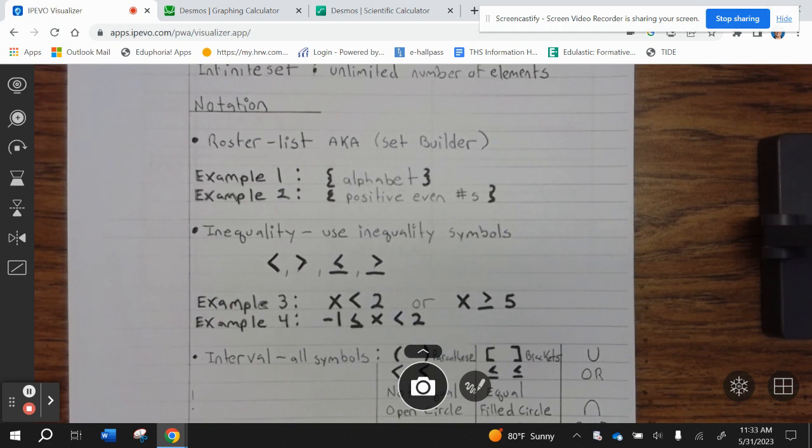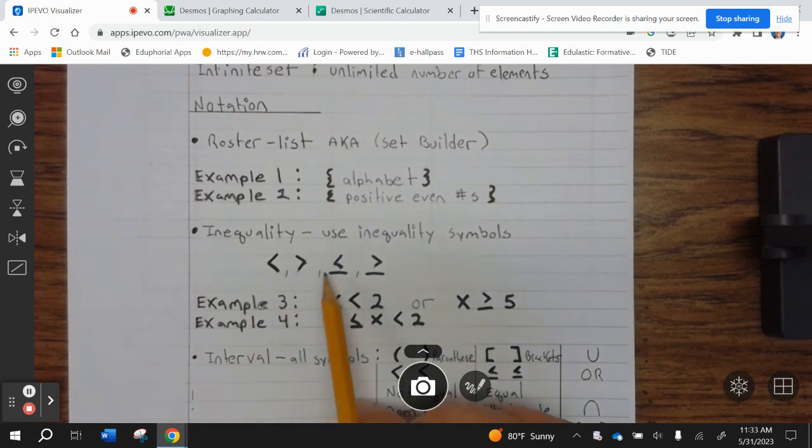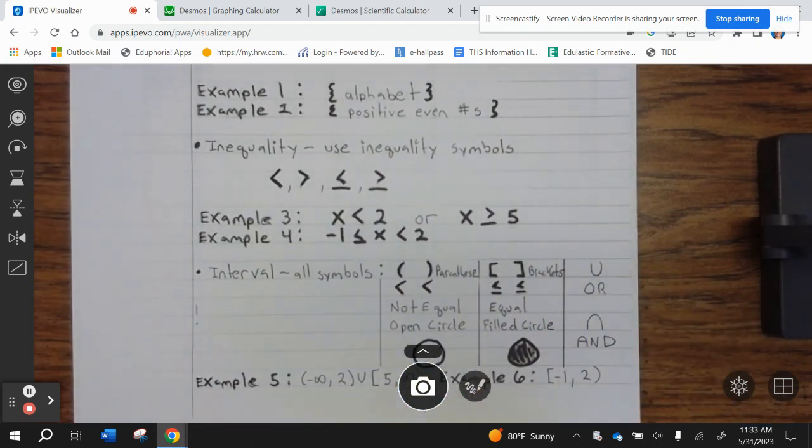Inequality uses inequality symbols, which are less than, greater than, less than or equal to, greater than or equal to. Example 3: X is less than 2 or X is greater than or equal to 5. Example 4: X is greater than or equal to negative 1 but less than 2.